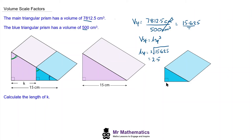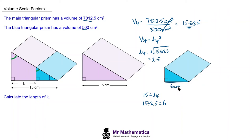We can now work out the length of the base: 15 divided by the length scale factor of 2.5 equals 6 centimeters. Since this base length is 6 centimeters, the length k must be 15 take away 6, so k equals 9 centimeters.